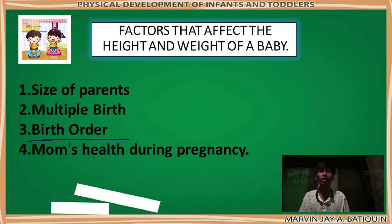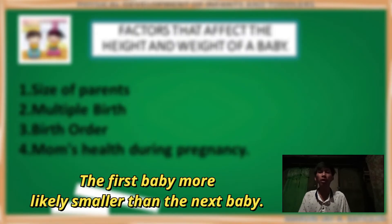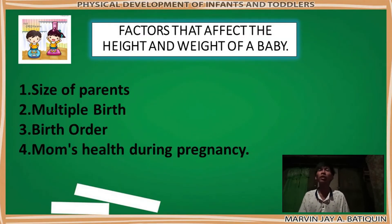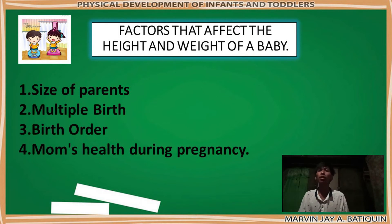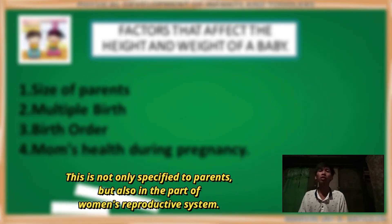The third factor is birth order. The first baby is more likely smaller than the next baby. The reason is that the mother is a first-timer in terms of pregnancy, so the process is very fresh and new. That's why in the next birth, the baby is heavier because the process already knows what to do. This is not only specific to the parents, but also to the woman's reproductive system.